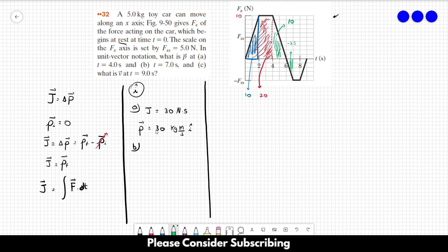So we have to sum 30 plus 10 minus 2.5. So the momentum is going to be 30, 40, 37.5 kilograms meters per second in the i-direction. So that's the answer of letter B.